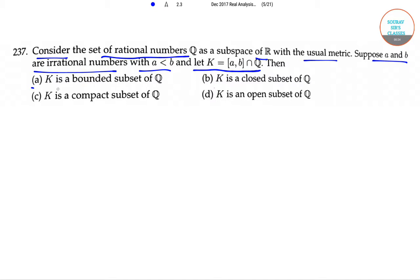Option a: K is a bounded subset of Q. For every x belonging to K, x is less than b plus 1, and hence the set is bounded. So option a is correct.